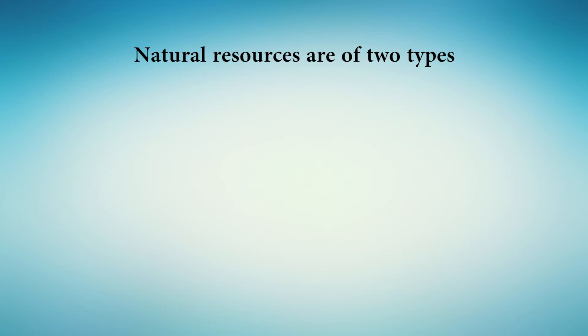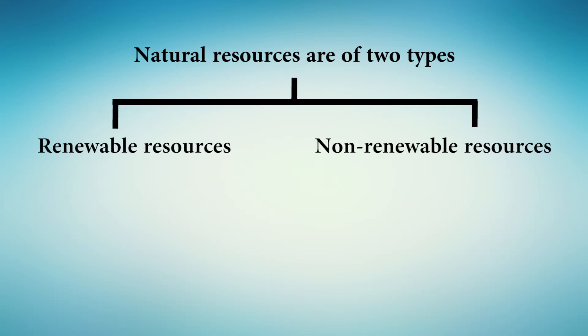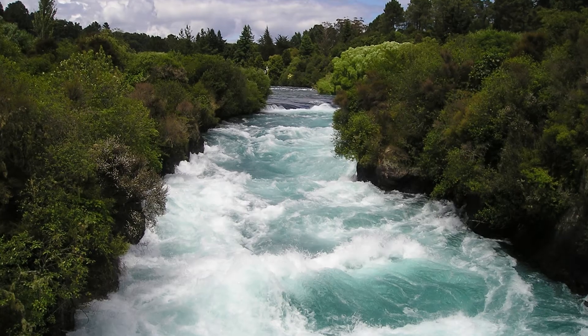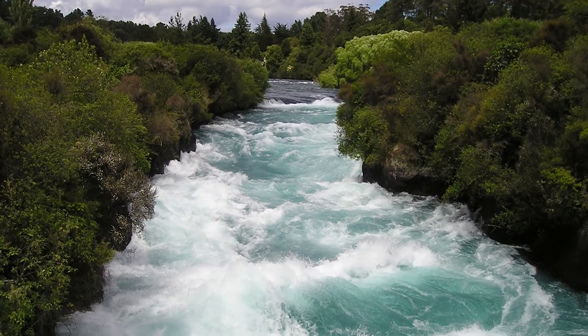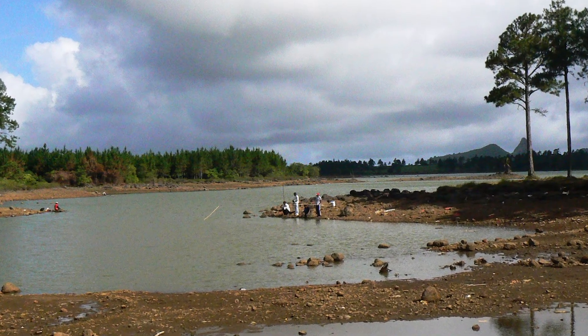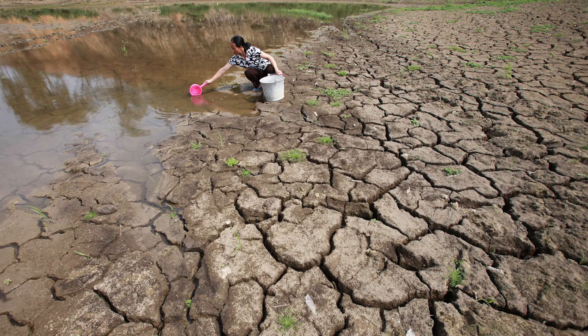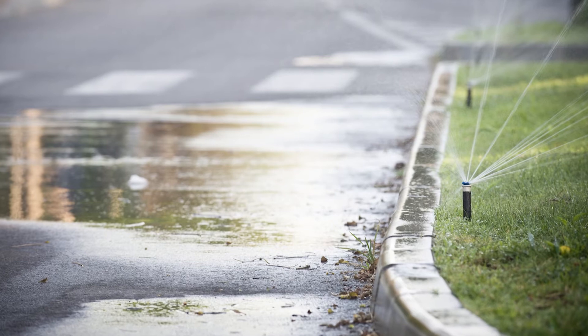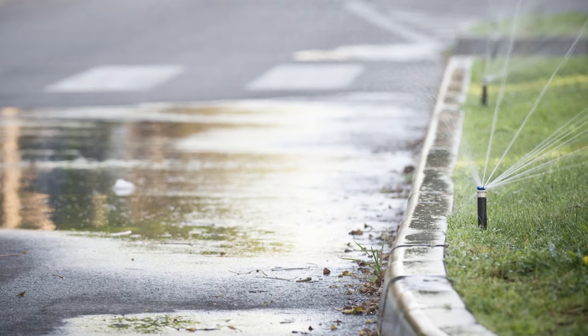As we already know, natural resources are of two types: renewable resources and non-renewable resources. If there is no proper conservation of resources, then even renewable resources can become scarce and the non-renewable ones can definitely get exhausted. For example, water is an unlimited renewable resource, but at present many parts of the world are facing shortage of water and drying up of water resources. To minimize this problem, we must use water in a proper way and wastage of water should be avoided.